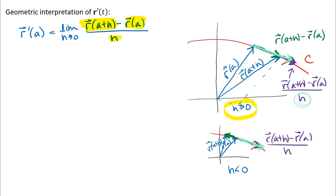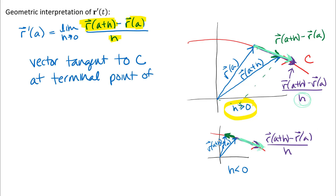In either case, you can see geometrically that what this represents is a vector tangent to the curve C at the terminal point of r(a). When you draw the derivative vector, remember to draw it with its tail on the curve at the terminal point of r(a). This tangency relationship shouldn't be a surprise if you think about derivatives in Calculus 1 and the relationship between the derivative of a function and the tangent line to a curve.